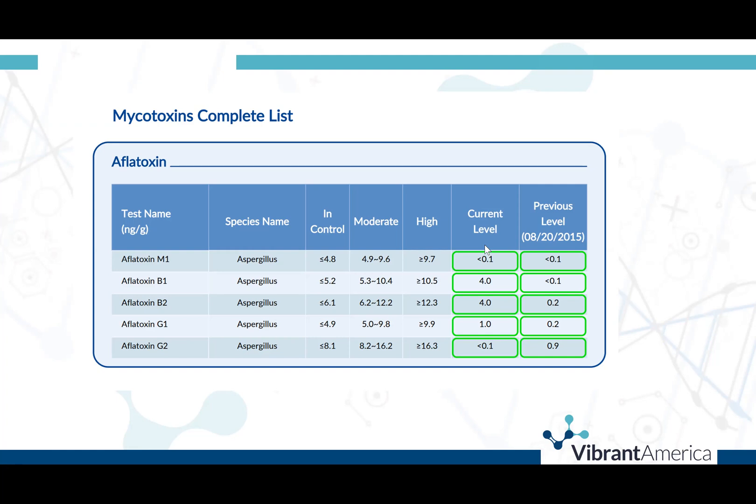You will notice that there are several species of aflatoxin: aflatoxin M1, B1, B2, G1, and G2. Aflatoxins are most commonly ingested; however, aflatoxin B1 can be absorbed through the skin. Aflatoxin exposure can lead to many health risks, including a greater risk of liver cancer in humans.